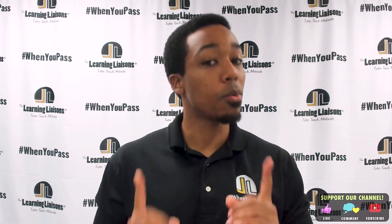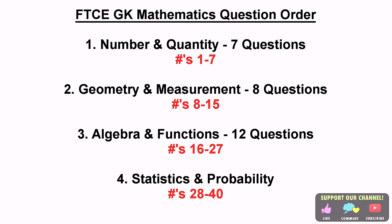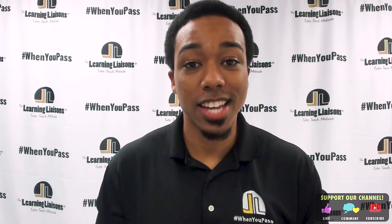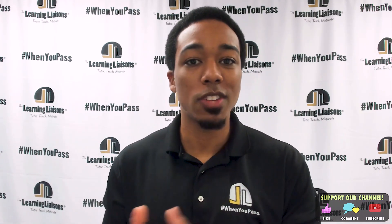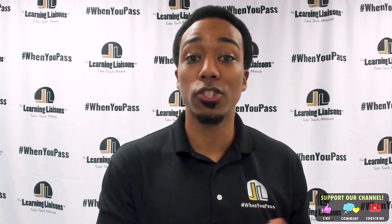Let's list that out one more time. Questions one through seven: competency one. Competency two: questions eight through 15. Competency three: questions 16 to 27. And competency four: questions 28 to 40. So the next time you take your test, you know exactly where each of these competency questions are going to appear.